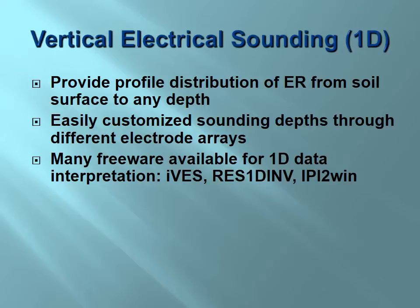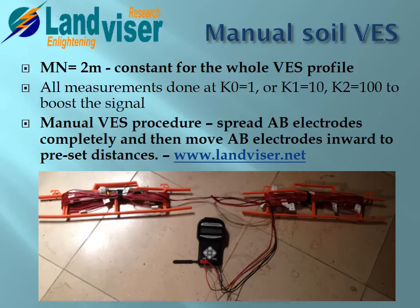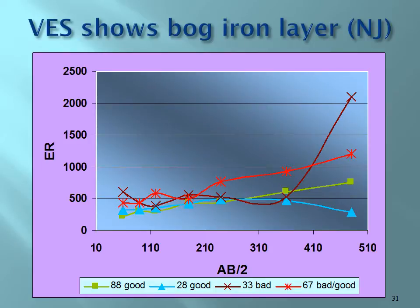For example, the Wenner array uses equal distance between four electrodes. In the Schlumberger array, you keep the potential electrodes in the middle and spread the A and B electrodes farther and farther apart, thus reaching deeper and deeper. The geometric coefficient for center-symmetric arrays like Schlumberger is calculated from the distances between electrodes. You can use a simple landmapper with custom wires, and the full procedure is available on our website.